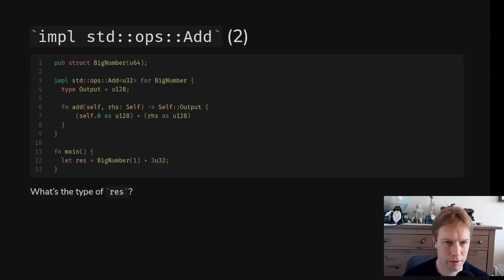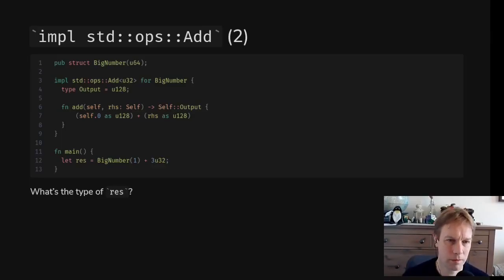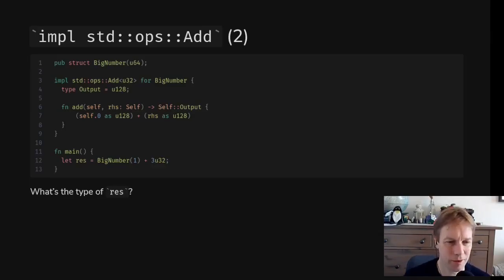That's how the real Add trait in the standard library works. There's compiler magic happening here: when you say plus, the compiler knows to call the add function in the Add trait.